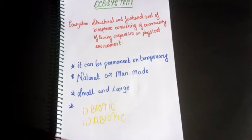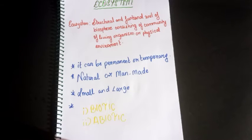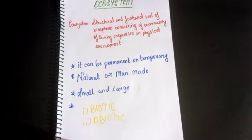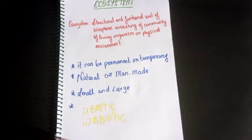The biotic components of an ecosystem are a community of living organisms like plants, animals, and microorganisms. This community is made up of many interdependent populations. These living organisms are interdependent to live, and on the basis of their nutrition relationship, they are classified into the following categories.